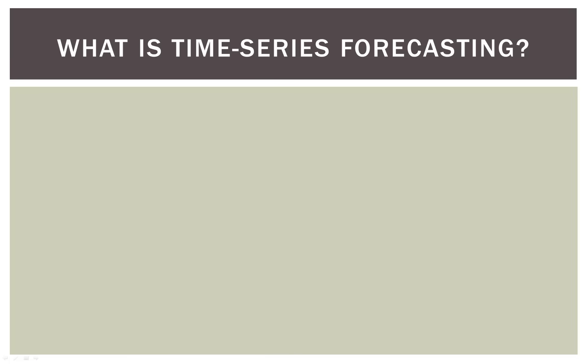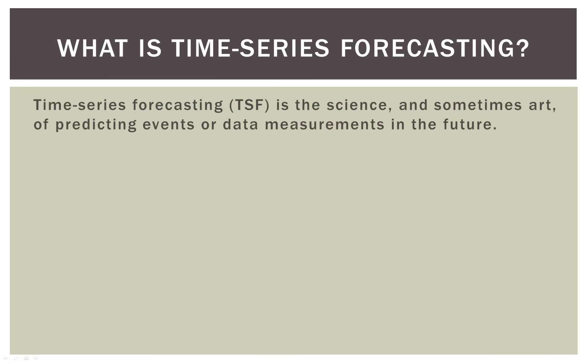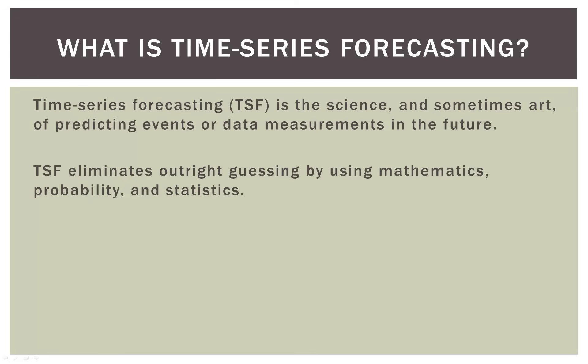So we looked at some examples, but what exactly is it? Well, time series forecasting is the science and sometimes art of predicting events or data measurements in the future. It helps us eliminate outright guessing by using some simple mathematics, probability, and statistics. Now, some time series forecasting can get very, very complex. But just keep in mind that what we're going to be doing here at the beginning, at least, is very simple in terms of the mathematics involved.